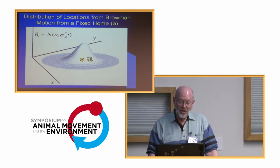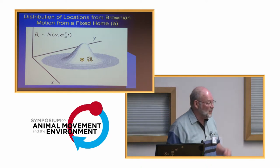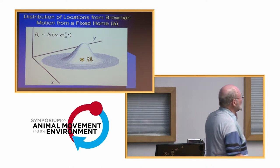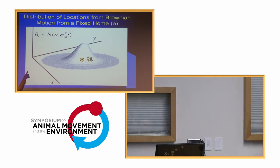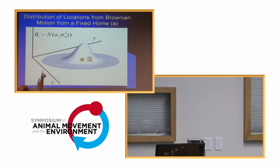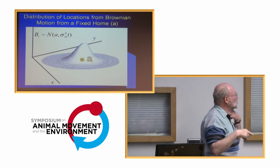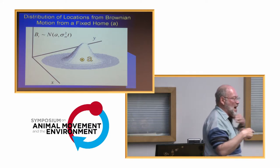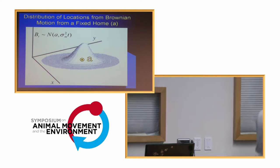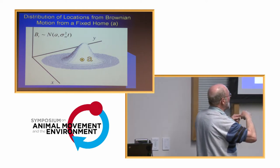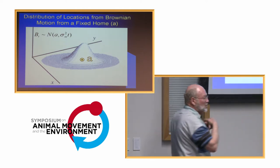The probability of finding animals at time t is a normal distribution with one parameter a — the central point or mean location — and then a variance sigma squared, which is a function of time: how long did they spend moving before they came back? It's very nice and straightforward. In fact, we've used that formula forever in a slightly different form as the bivariate normal home range estimation method.